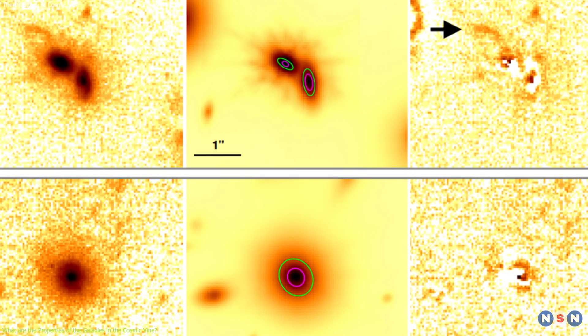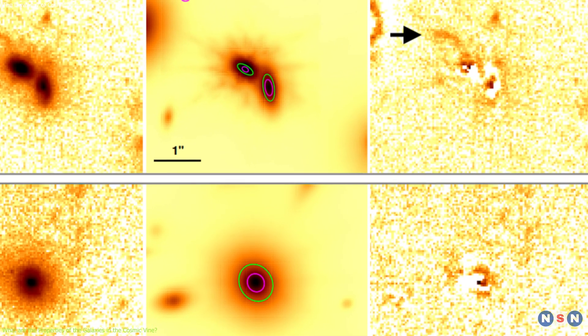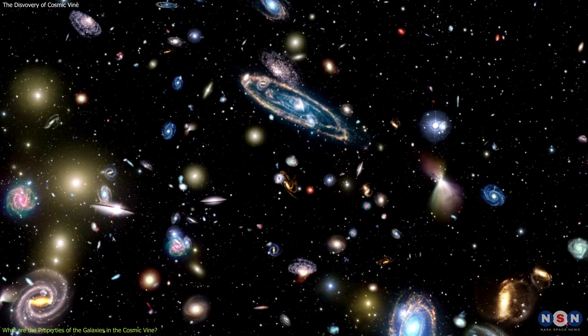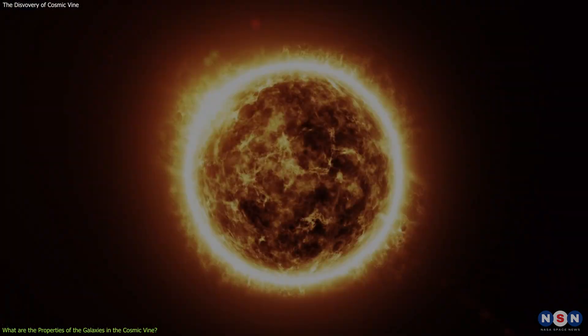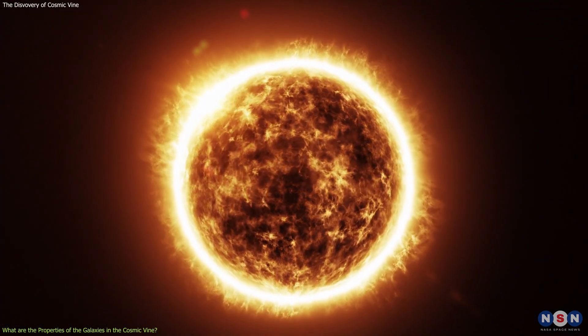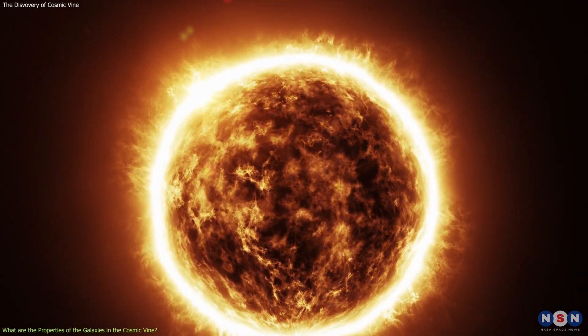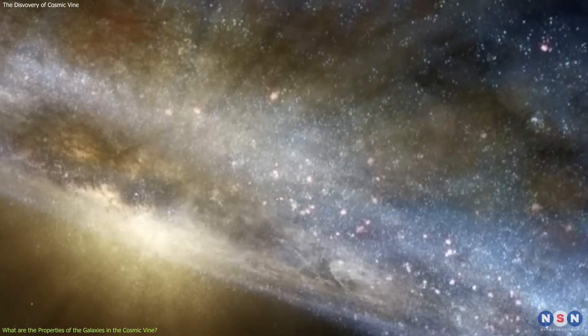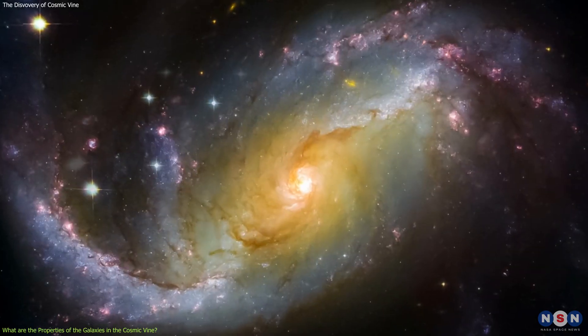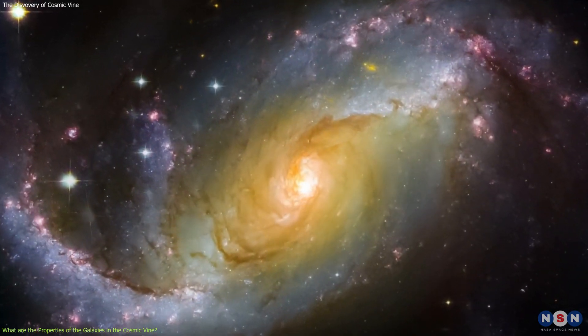They found that the galaxies in the Cosmic Vine have a wide range of stellar masses, from 10 to the power of 8 to 10 to the power of 11 solar masses. A solar mass is the mass of our Sun, which is about 2 times 10 to the power of 30 kilograms. The stellar mass is the total mass of all the stars in a galaxy, which is an indicator of how big and old the galaxy is.